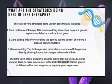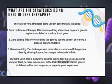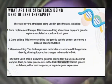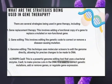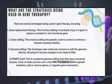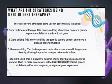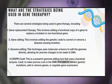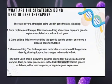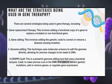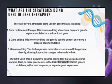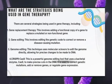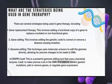Number three, genome editing — this uses molecular scissors to edit the genome directly, allowing for precise changes to be made to DNA. Number four, CRISPR — this is a powerful genome editing tool that uses a bacterial enzyme, Cas9, to make precise cuts in the DNA. It is used to correct genetic mutations, add or remove genes, or regulate gene expression.